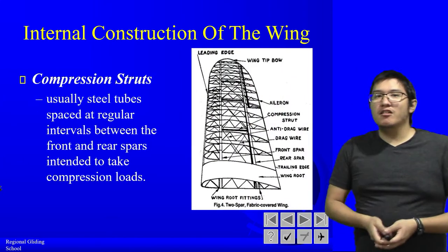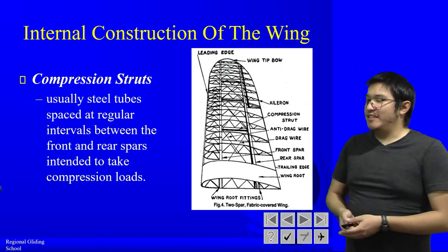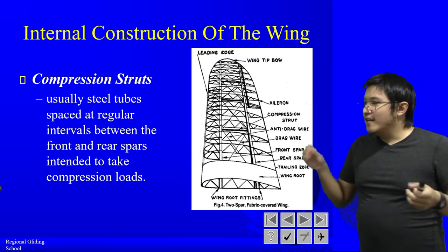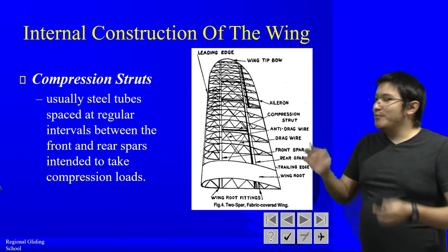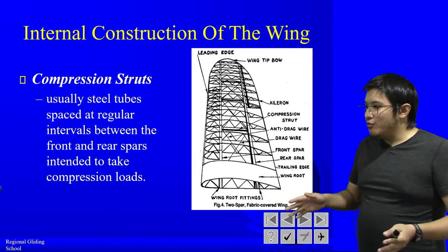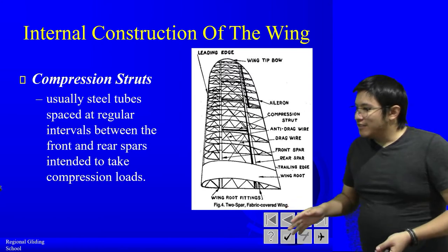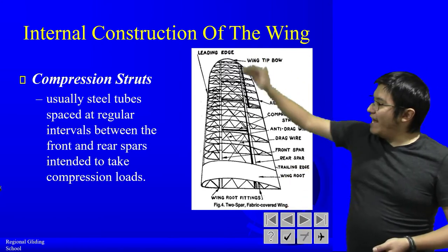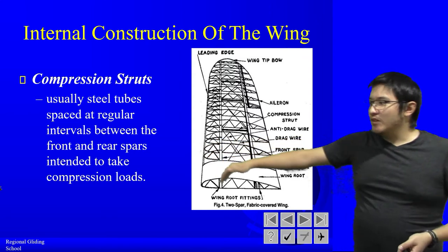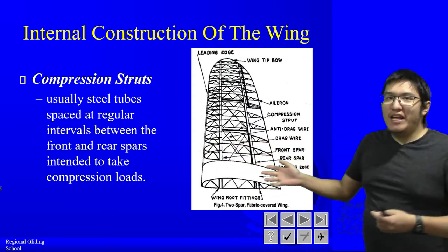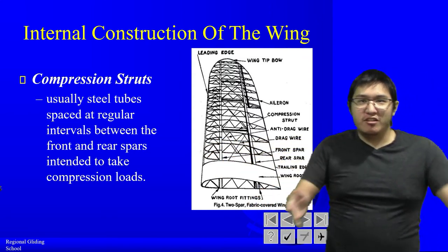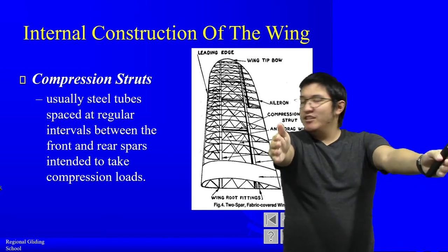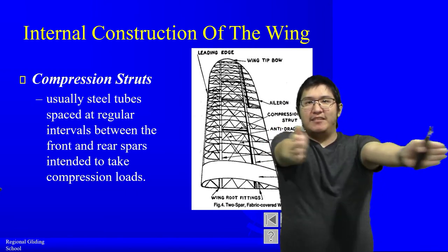Next, there are what we call compression struts. Compression struts are usually steel tubes placed at regular intervals within the wing. They go between the front and rear spars and they take compression loads — they prevent the wing from collapsing inward.